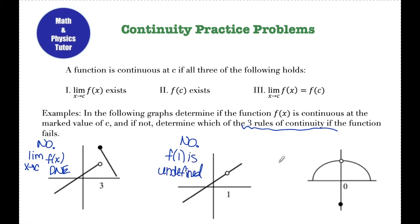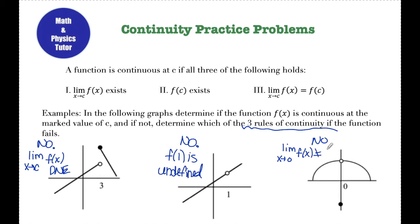In this third graph, the limit as x approaches 0 exists — that's this y value here — so the first part of the definition is met. f of 0 also exists; it's just this y value down here. The reason this function is not continuous is that the limit as x approaches C of f of x is not equal to f of C. These two values are not equal, so no — the limit as x approaches 0 of f of x does not equal f of 0.